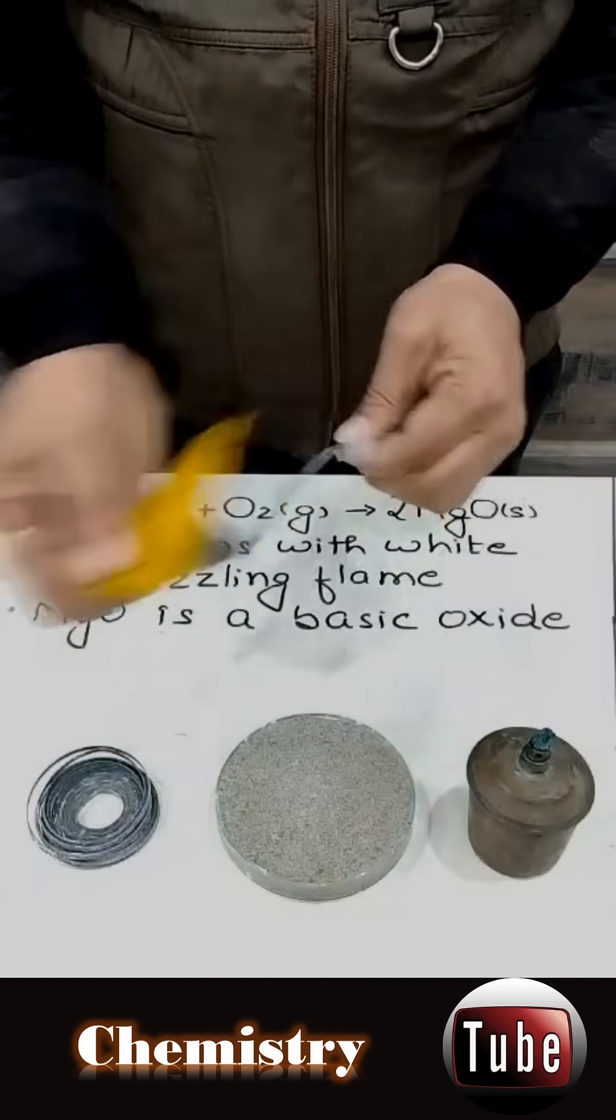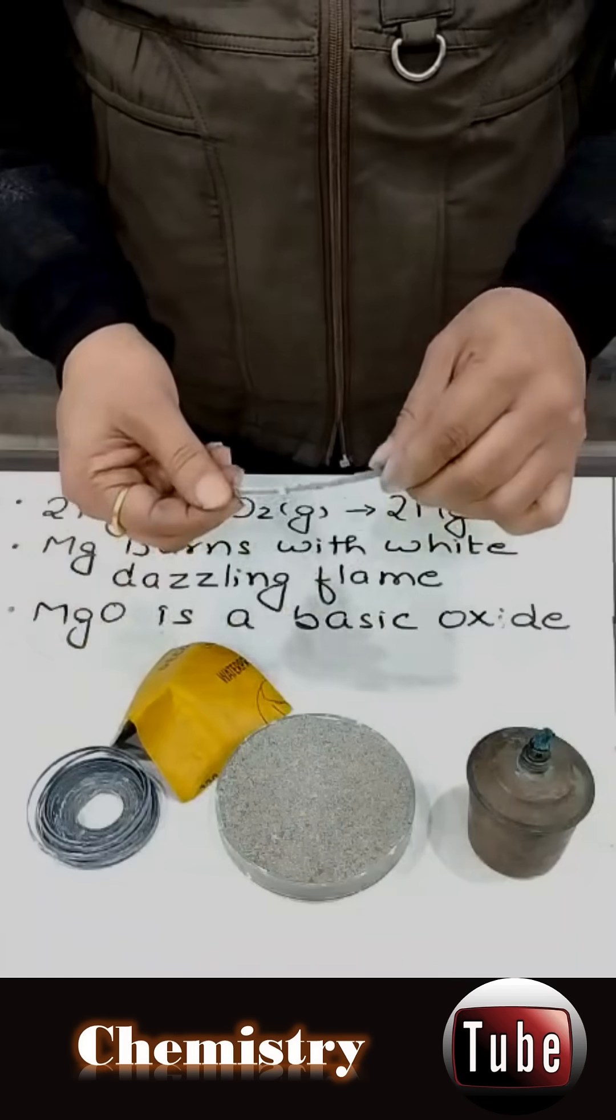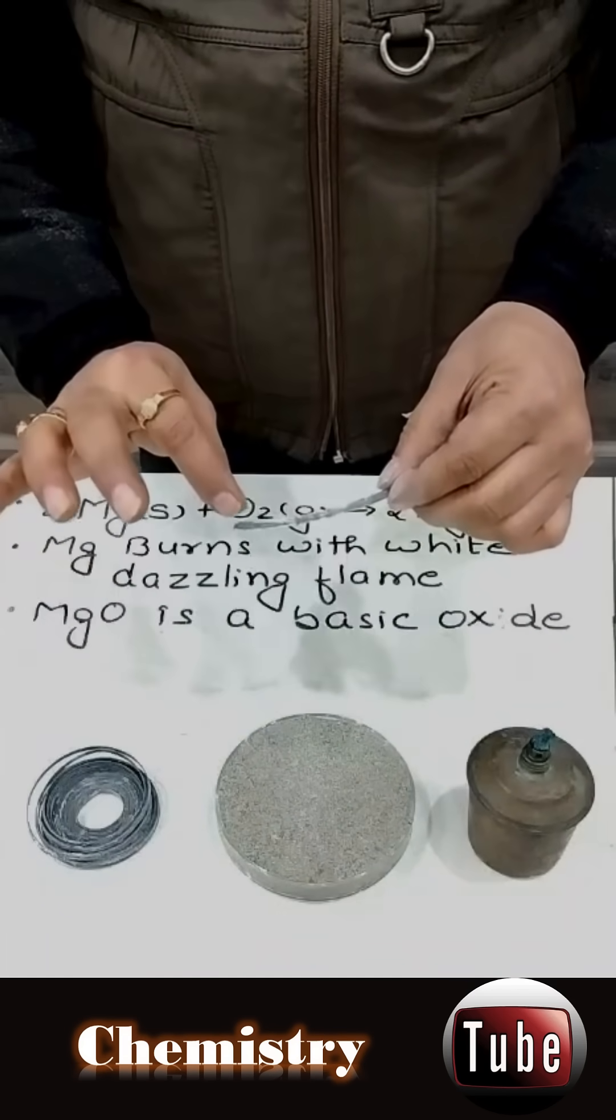You need to rub this magnesium ribbon with sandpaper until it gets back its luster. Now you can see that this magnesium ribbon has got its luster back.